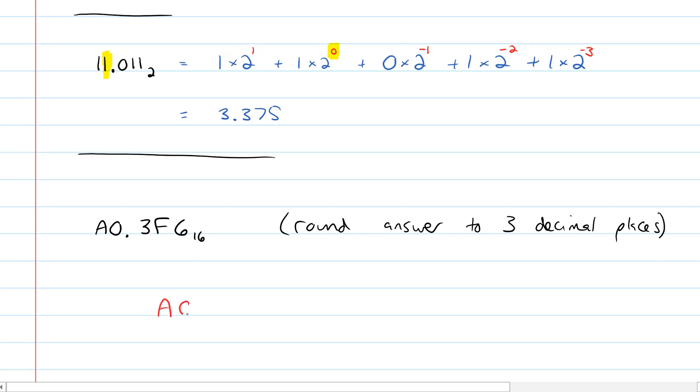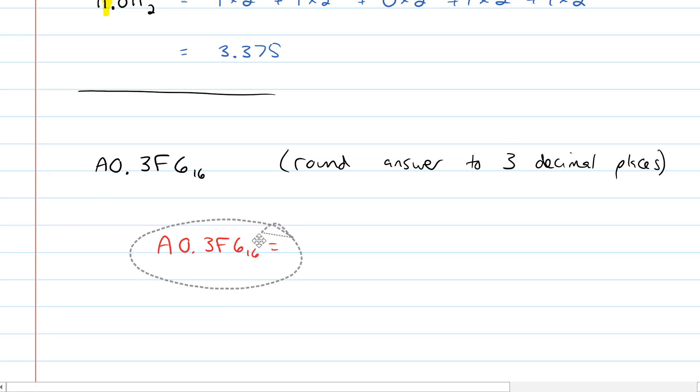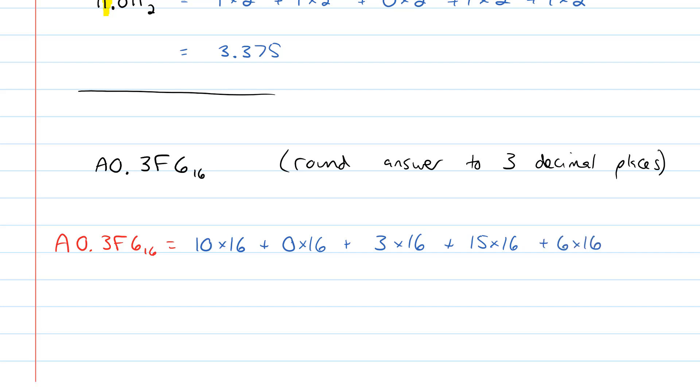And so we're going to write this as, I'm just going to rewrite it below. A0.3F6 base 16 is equal to, actually I'm going to move that to the left a bit so I don't run out of space. I may run out of space anyway, but let's not run out of space immediately. The number A in hexadecimal is the number 10. So you're going to have 10 times 16, that's our A, plus, and remember for our first pass, we're not actually writing any powers yet, so this is not correct until I've done the powers part. 0 times 16, plus 3 times 16, plus F is 15 times 16, plus 6 times 16. Now we try to figure out what's the digit to the left of our radix point, or hexadecimal point in this case, and it's the 0. That's the one that's going to have the 0 up in the exponent, and then the exponent to the left will be to the 1's power, and then the exponent to the right will be a negative 1, negative 2, and negative 3.